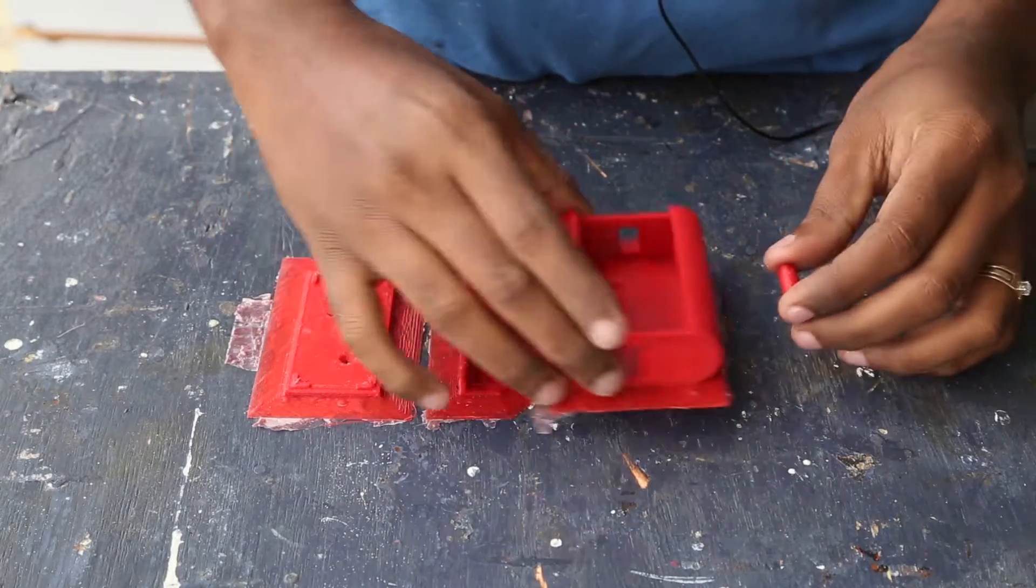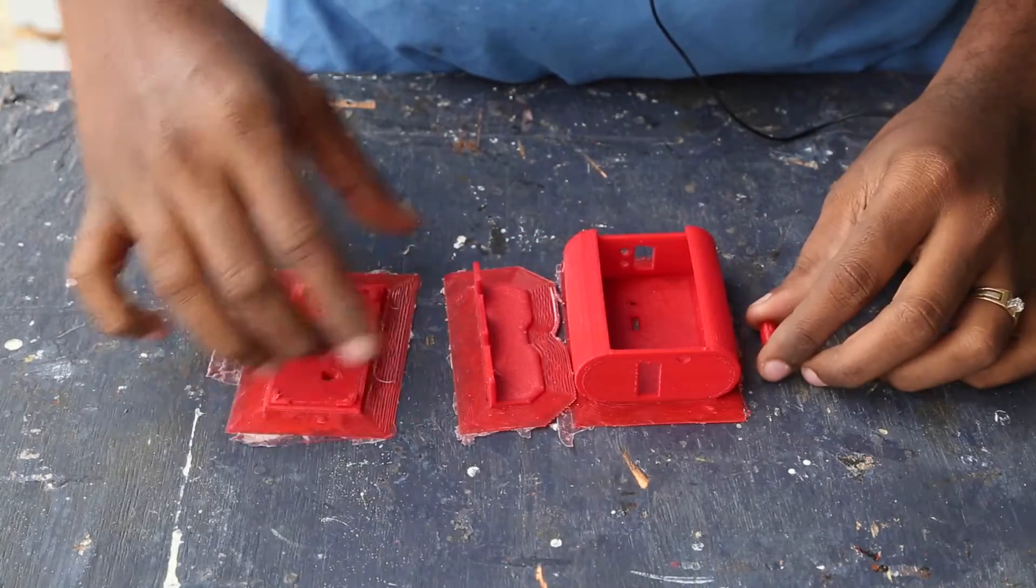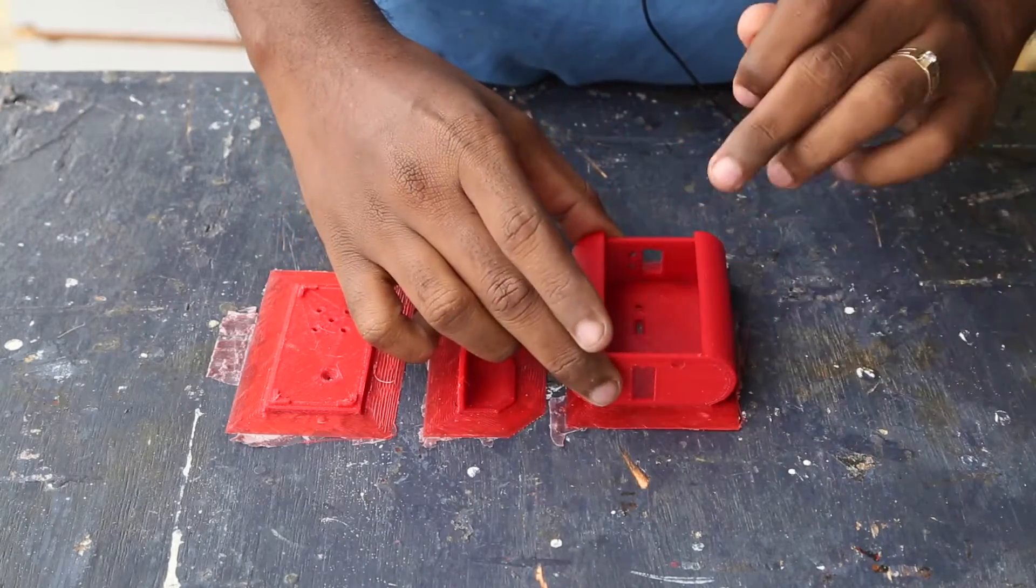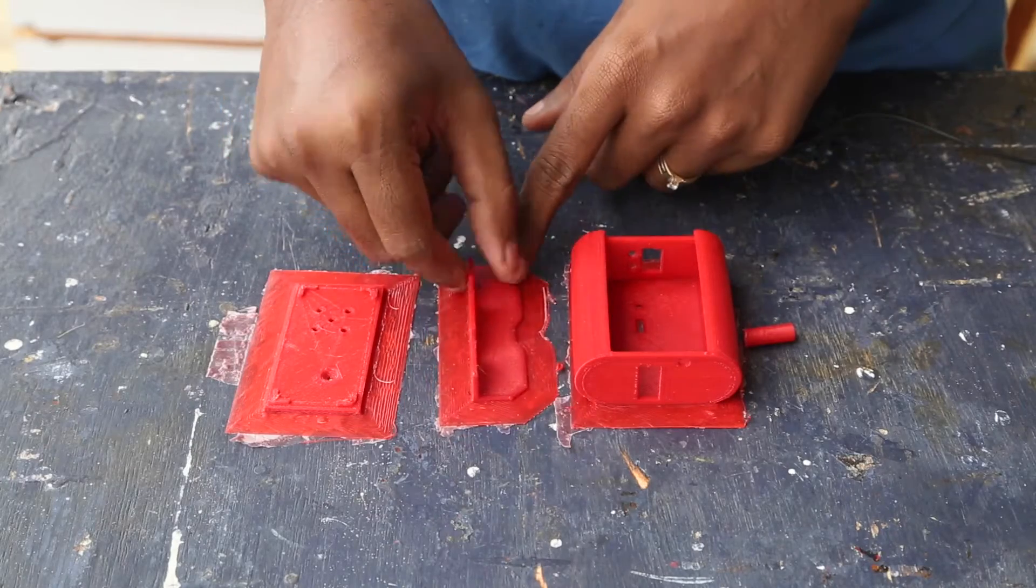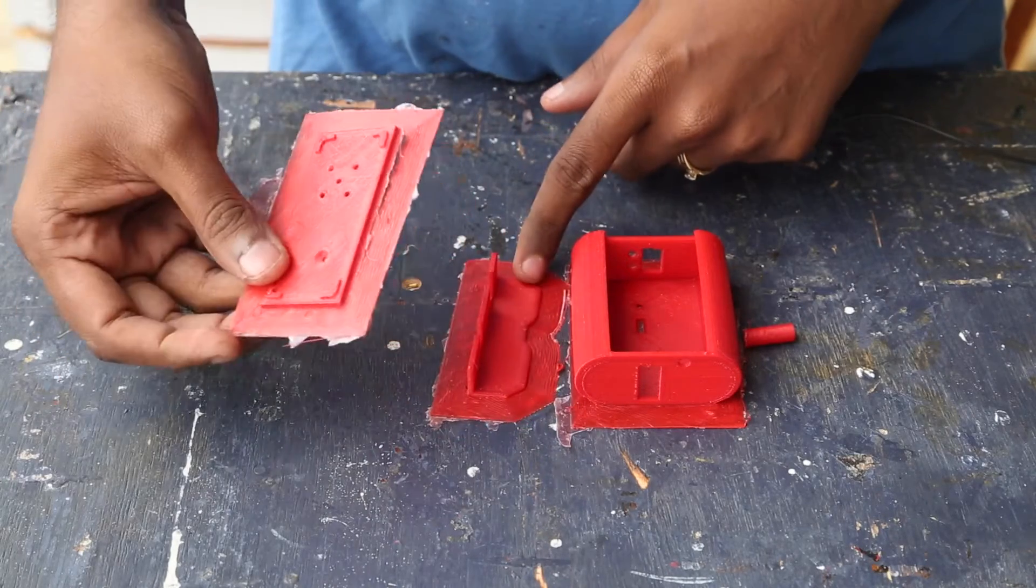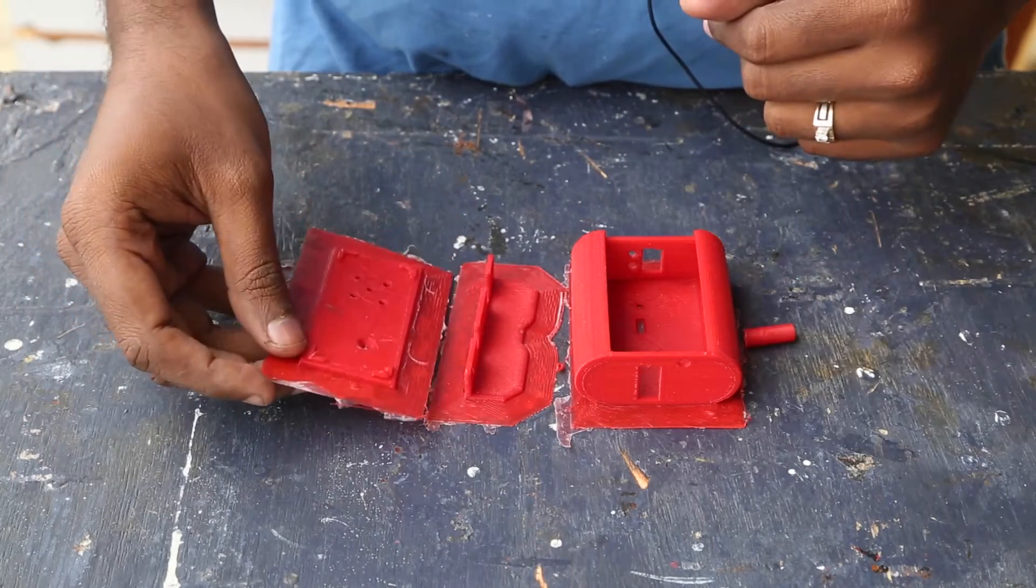So here are the 3D printed parts. The four parts. This is the case that will enclose the batteries. This is the spacer for the screw. This is the spacer in which we will be gluing the circuits. And this is the lid. Let me go ahead and clean this up.